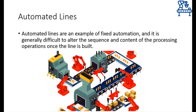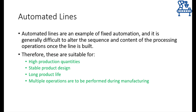Whether it's a production line or an assembly line, automated lines are an example of fixed automation. Fixed automation setups are specialized for producing one kind of product only, and therefore alteration in the product is really difficult to incorporate once the automated line starts working. Such lines are hence most suitable for mass production of products whose design is well established and is not going to change any sooner. Moreover, products whose life is anticipated to be quite long are only produced through such fixed automation lines.